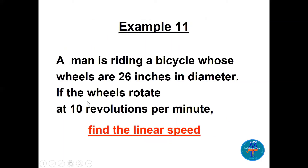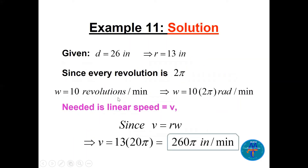A man is riding a bicycle whose wheels are 26 inches in diameter. If the wheels rotate at 10 revolutions per minute, find the linear speed. The radius r = 13 inches. Since each revolution is 2π radians, ω = 10 × 2π = 20π radians per minute. Using v = rω, v = 13 × 20π = 260π inches per minute.